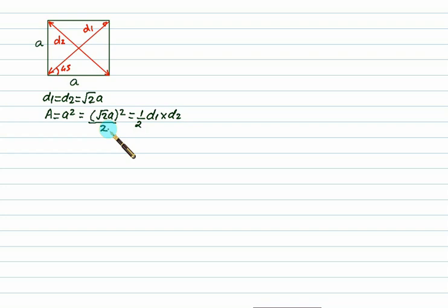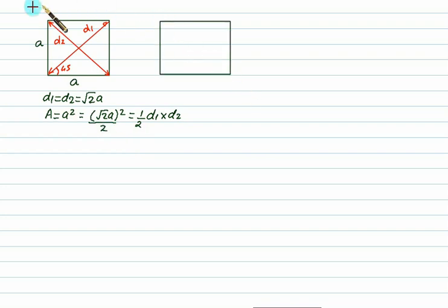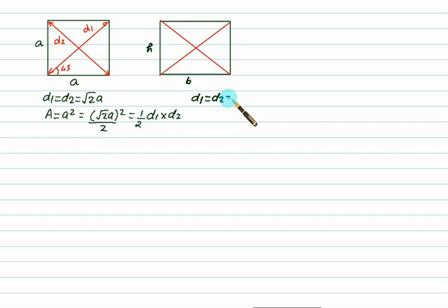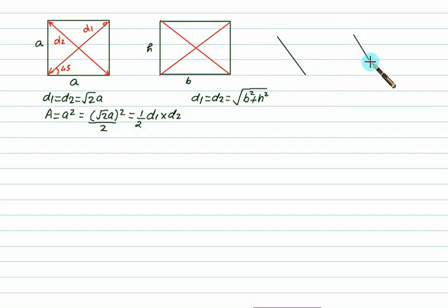For a rectangle with base b and height h, if we draw a diagonal, this time it will not bisect the angles. The length of the diagonal is d1 = d2 = √(b² + h²) using Pythagoras.